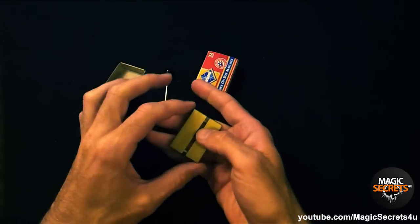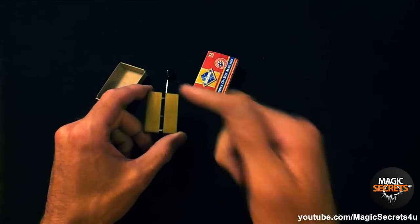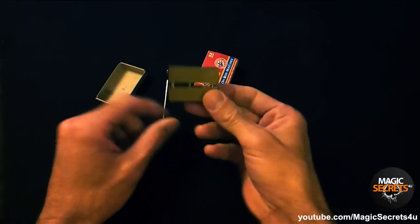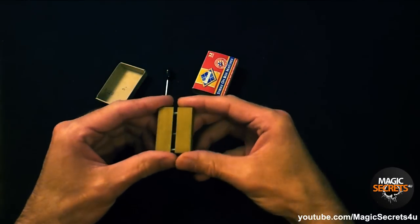What's up magic fans? Now I'm going to show you how this works. This is the explanation for the penetrating matchbox trick. You have this special block of brass that's made so the thing comes apart right in the center. Check it out.